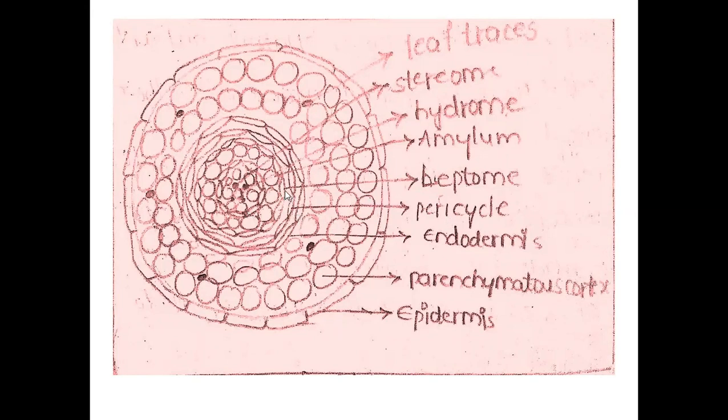Below the pericycle, one oral is present called leptome. Leptome mainly helps in translocation of organic solutes in the plant body of polytrichum.